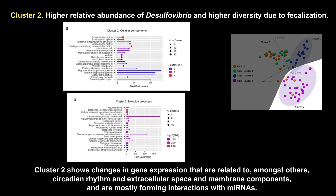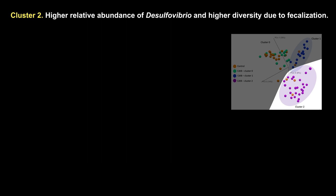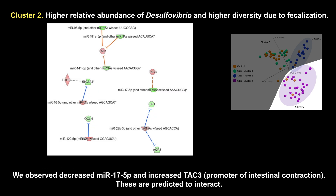Cluster 2 shows changes in gene expression related to, amongst others, circadian rhythm and extracellular space and membrane components, and these are mostly forming interactions with microRNAs. We observed increased MIR175P and increased TAC3, a promoter of intestinal contraction, which are predicted to interact.